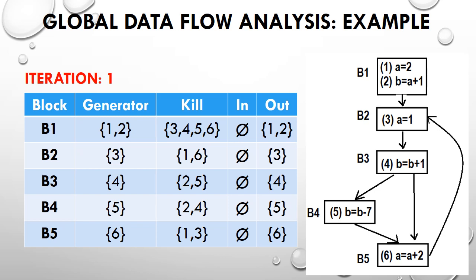Initially we suppose the input for every block is null, represented by the phi set. So input of b1, b2, b3, b4, and b5 are all null. Later we compute the output values. It is visible that b1 generates a and b, so the output of b1 will be {1, 2}. The output of b2 is statement 3, output of b3 is statement 4, output of b4 is statement 5, and output of b5 is statement 6. So output of b1 is {1,2}, b2 is {3}, b3 is {4}, b4 is {5}, and b5 is {6}.